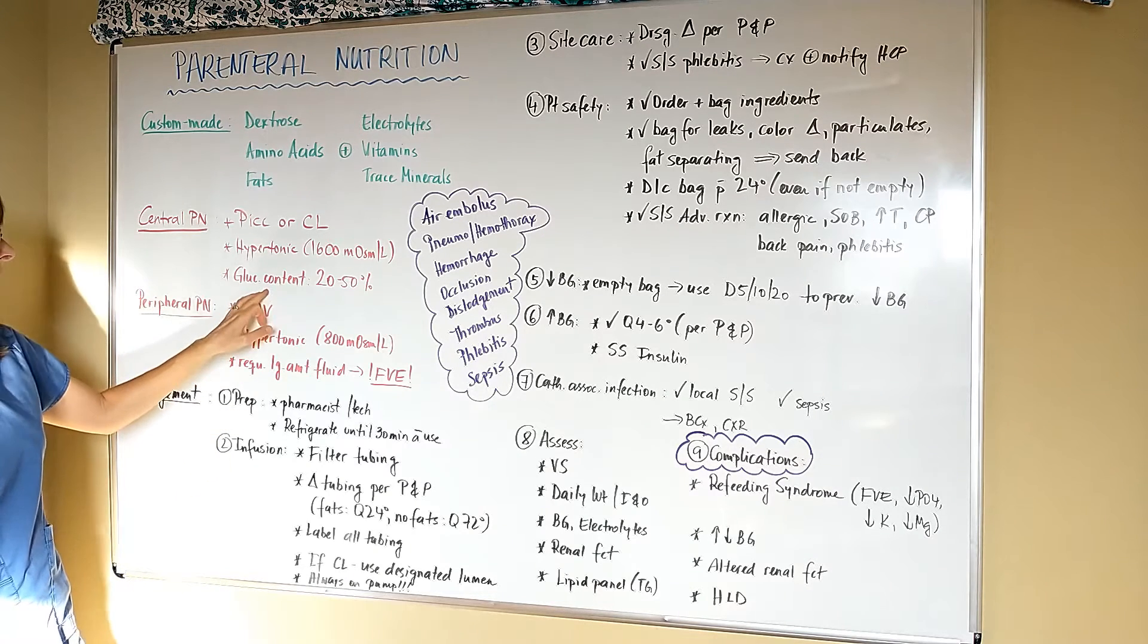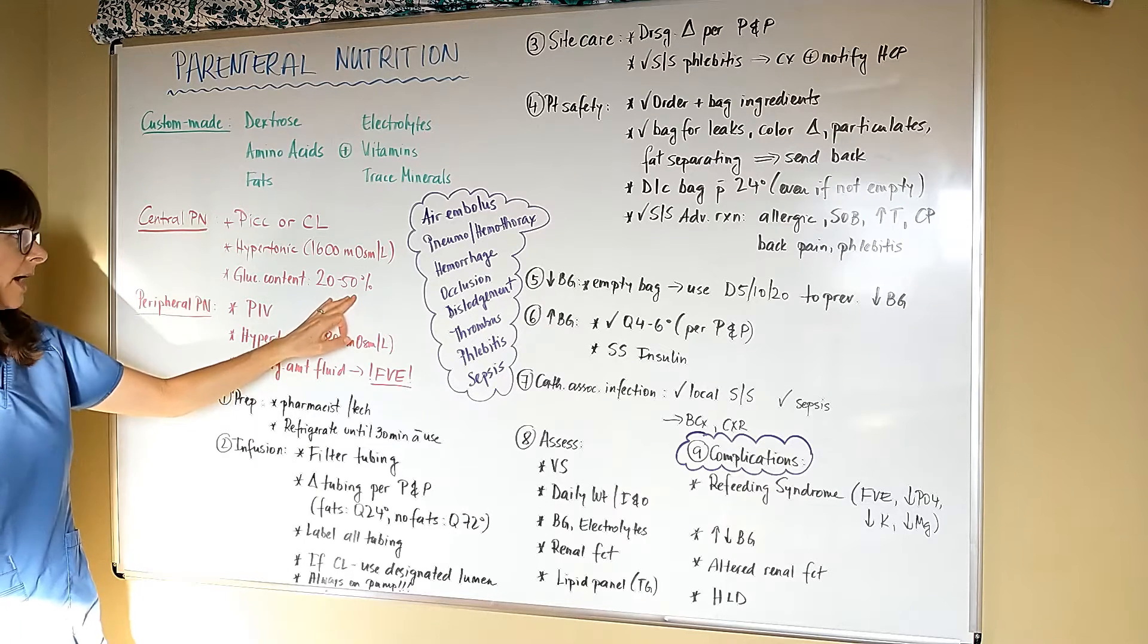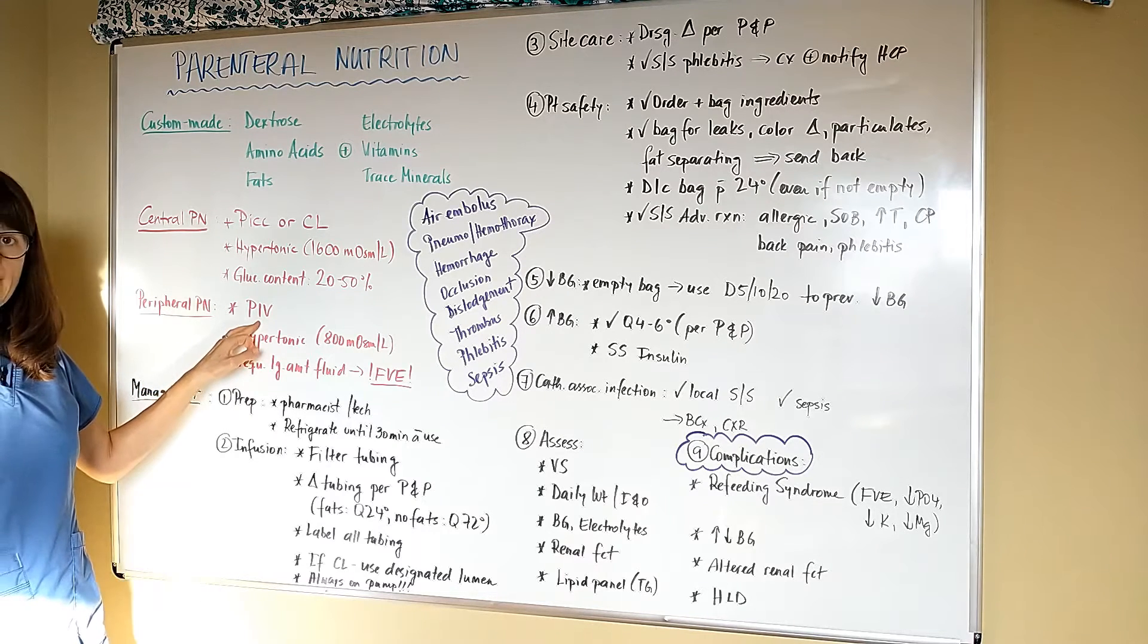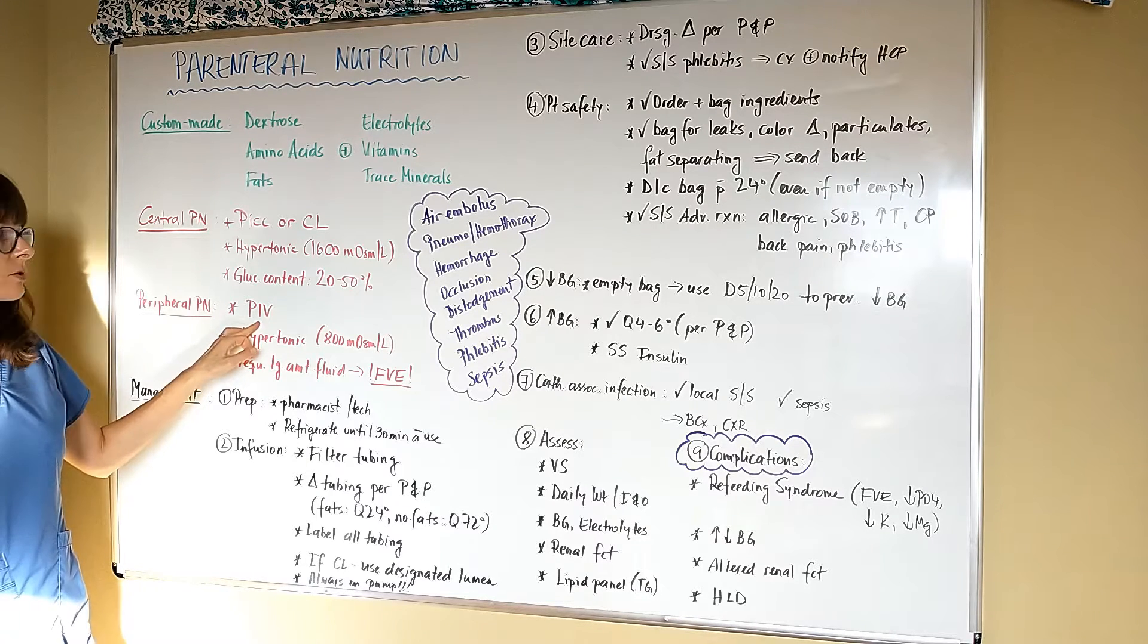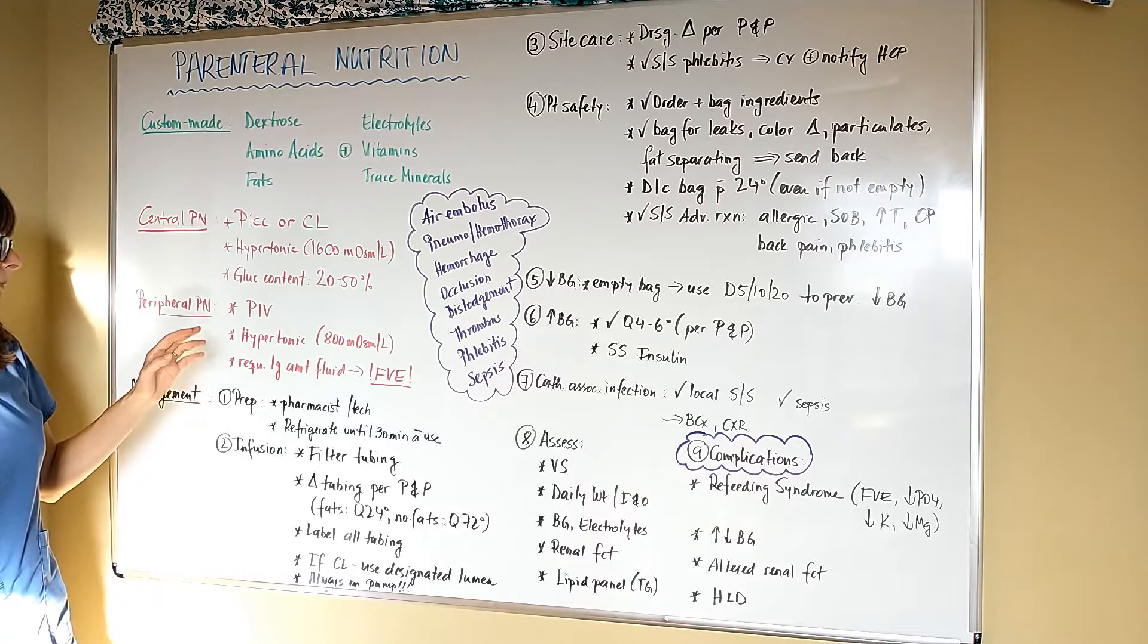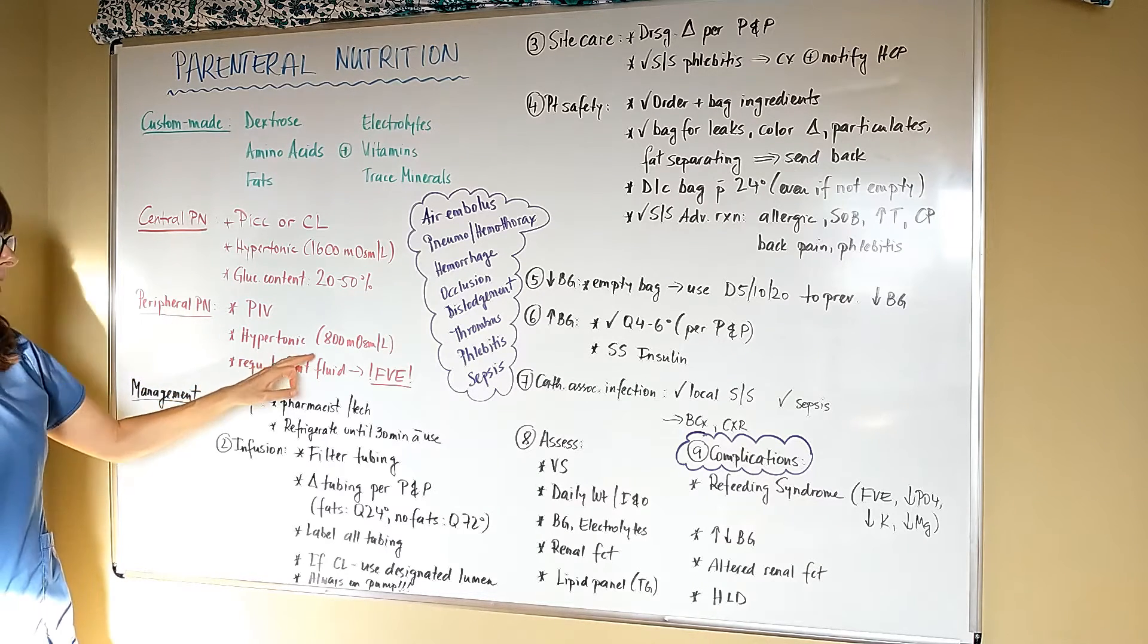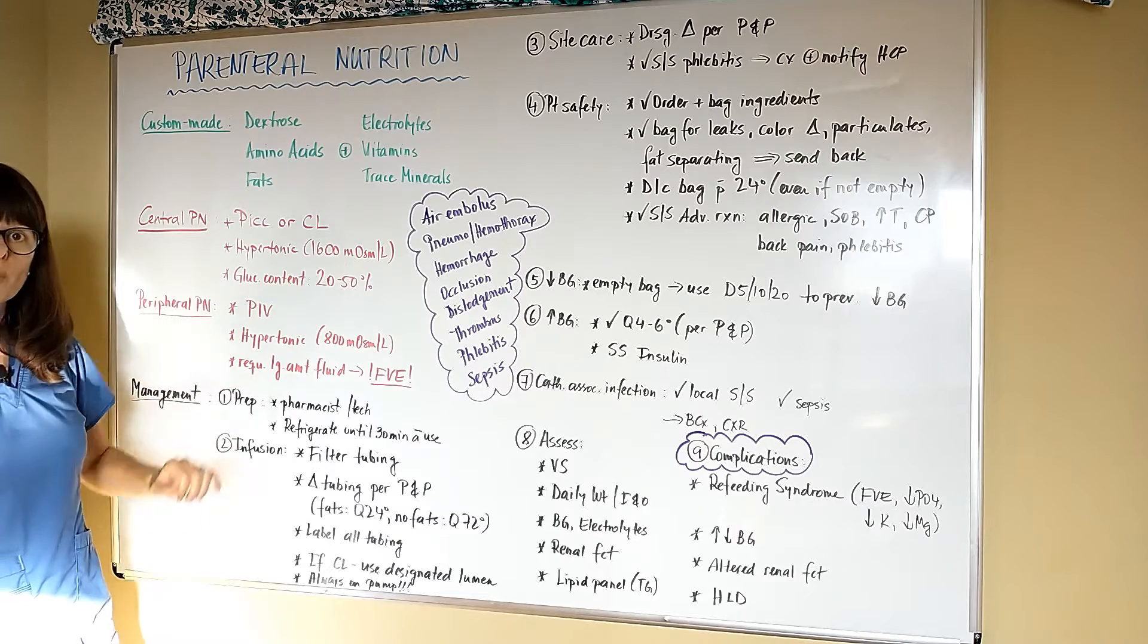For central parenteral nutrition, the glucose content can be as high as 20 to 50 percent, which is really high. There is also the option of administering peripheral parenteral nutrition, which will basically be a regular peripheral IV. But the risk for phlebitis is really high. Phlebitis is a risk of both central as well as peripheral nutrition, but definitely much higher with a smaller lumen of the IV catheter. For peripheral parenteral nutrition, it's still hypertonic solution but it might be less concentrated, such as 800 milliosmol compared to 1600.